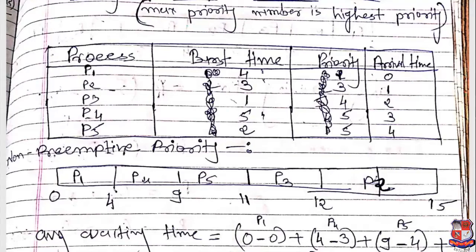The next process is P4 because its priority value is 5, which is the highest. P5 also has priority value 5, but when two processes have the same priority, we use FCFS, so P4 is chosen first. P4 starts at 4, plus burst time of P4 which is 5, gives 9. Then P5 is next with priority 5, followed by P3 with priority 4, and finally P2 with priority 3 — burst time 3, so 12 plus 3 equals 15.